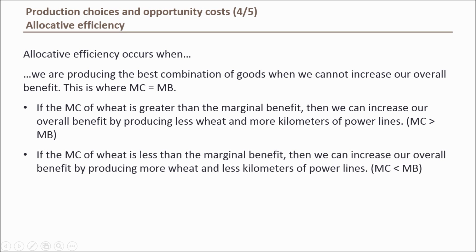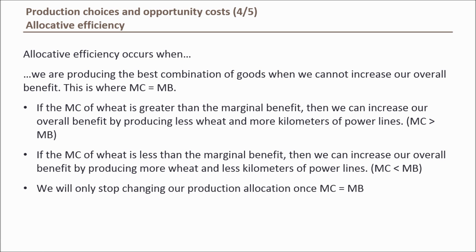It works the other way around too. If the marginal benefit of wheat is greater than the marginal cost, we can improve our overall benefit by producing more wheat, because the benefit we're deriving from the extra ton is greater than the cost. In other words, the amount of power lines we're willing to pay for an extra ton of wheat is more than the amount of power lines we actually have to give up to produce that extra ton. This process will continue until marginal cost equals marginal benefit.